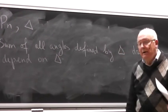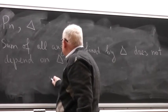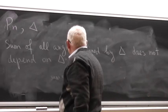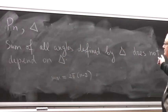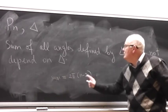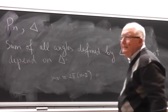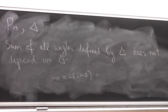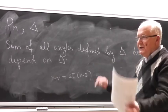And then you can prove that, given n, any triangulation delta, the sum of all angles defined by this triangulation delta does not depend on delta. Since in the commutative case, you know that the sum is 2 pi n minus 2, by dividing this sum by 2 n minus 2, you know what is the non-commutative pi.